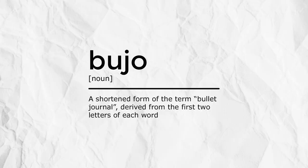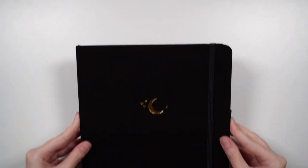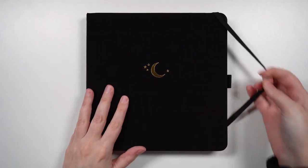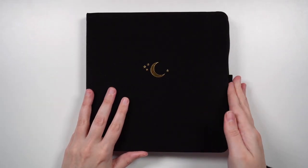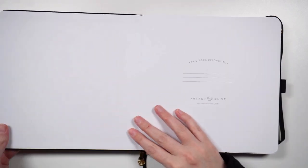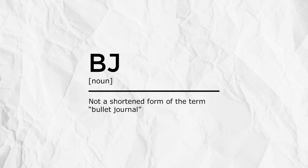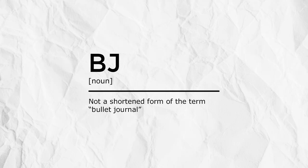The next term is bujo, a shortened form of bullet journal, taking the first two letters of each word. Normally this is used to describe the noun or the notebook you're using, rather than the verb or the action of bullet journaling. The next term is not a shortened form of bullet journal, so please don't use it — or at least if you do, just know that I'm quietly judging you.